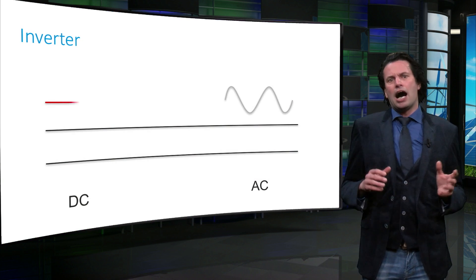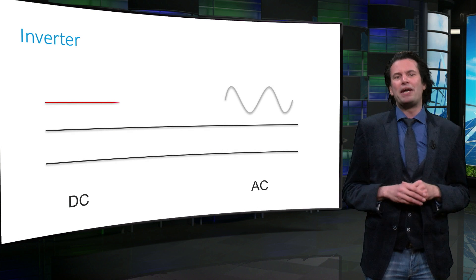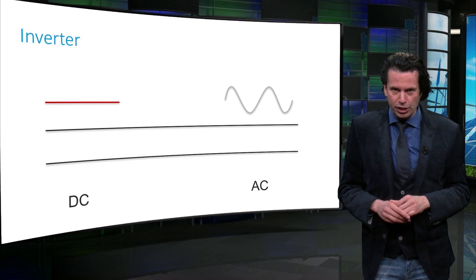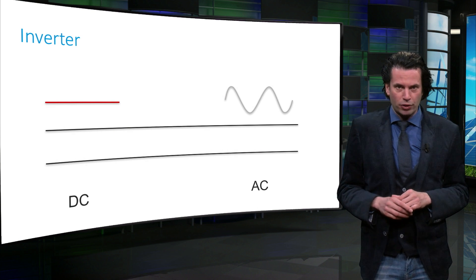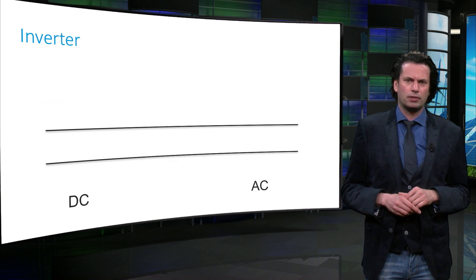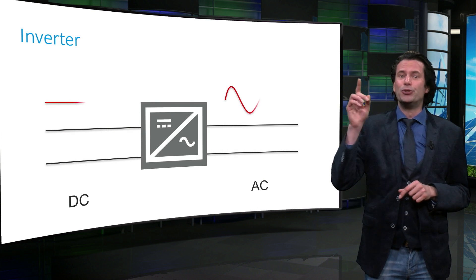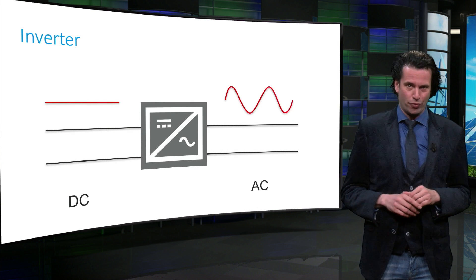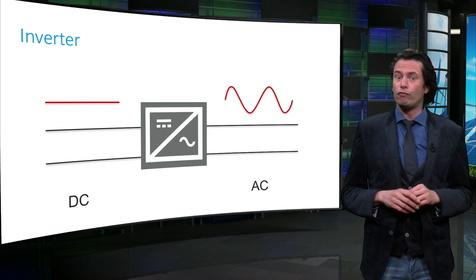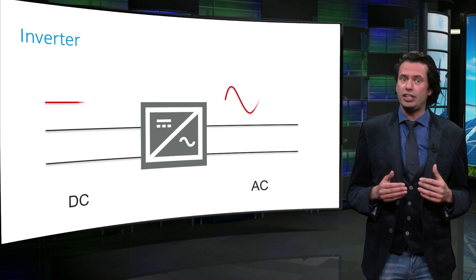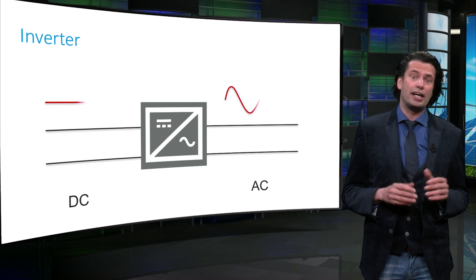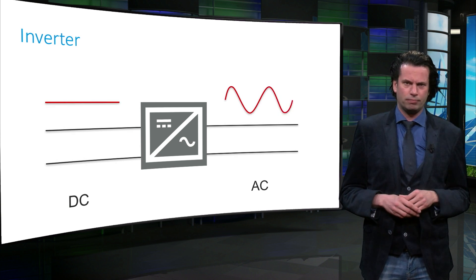How do we make this conversion from DC solar power to easily usable AC power? By using an inverter. The inverter converts a DC electric signal into an AC one.